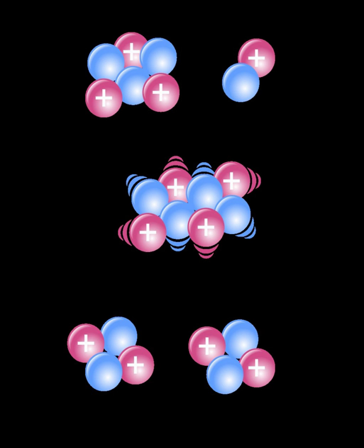Thus, a nuclear reaction must cause a transformation of at least one nuclide to another. If a nucleus interacts with another nucleus or particle and they then separate without changing the nature of any nuclide, the process is simply referred to as a type of nuclear scattering, rather than a nuclear reaction.